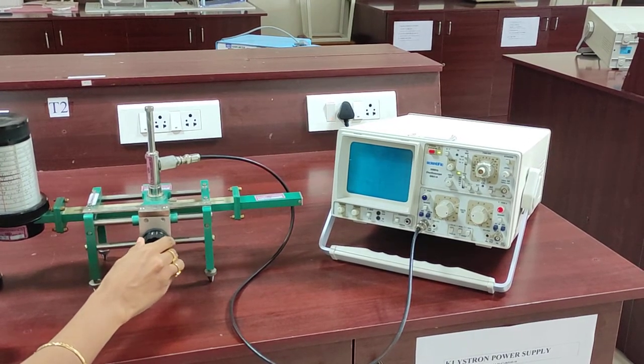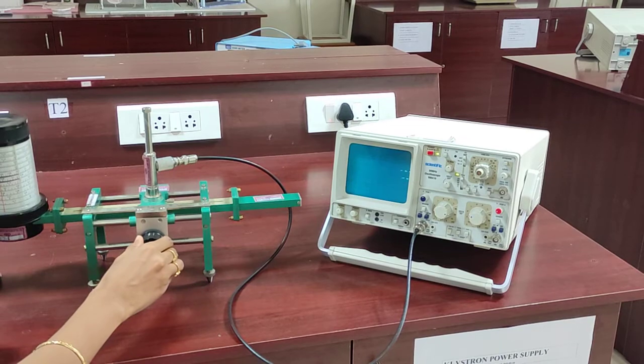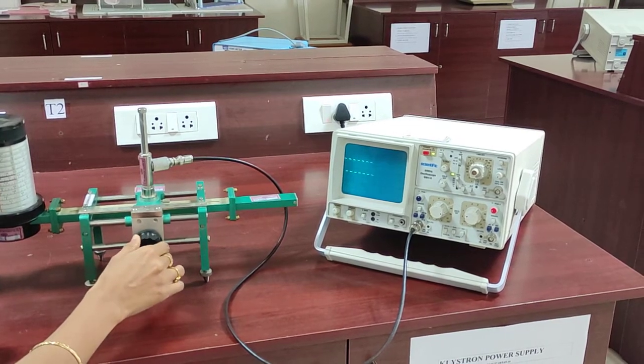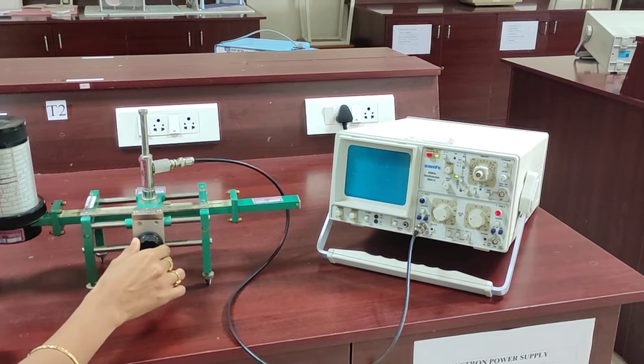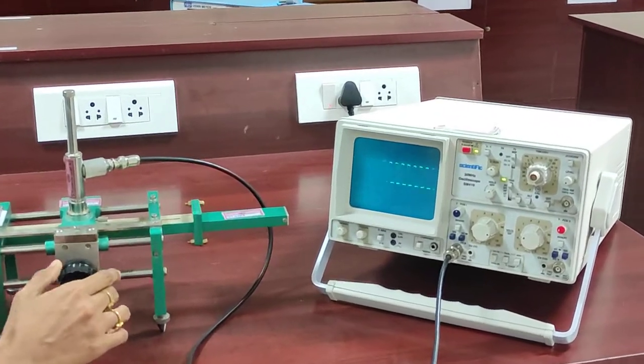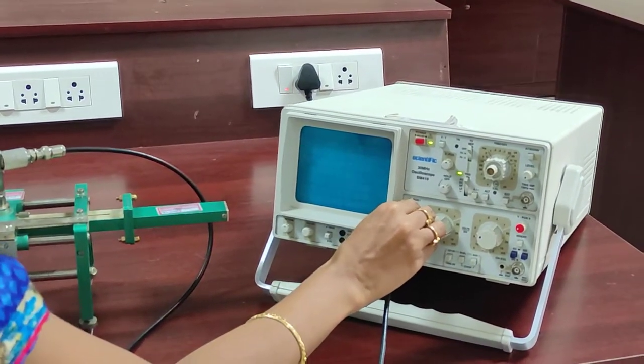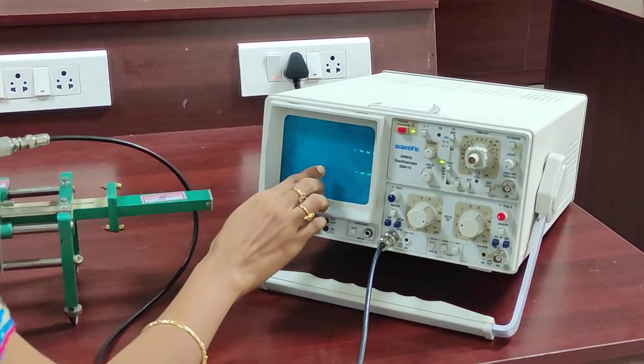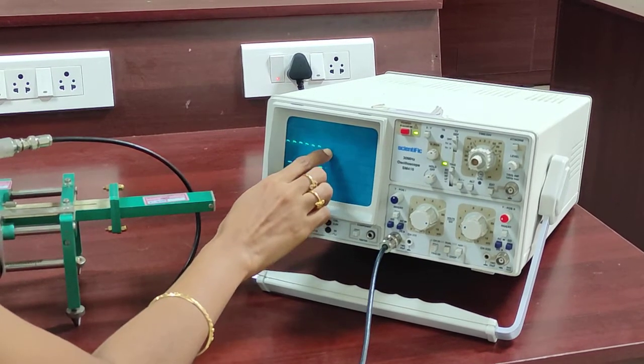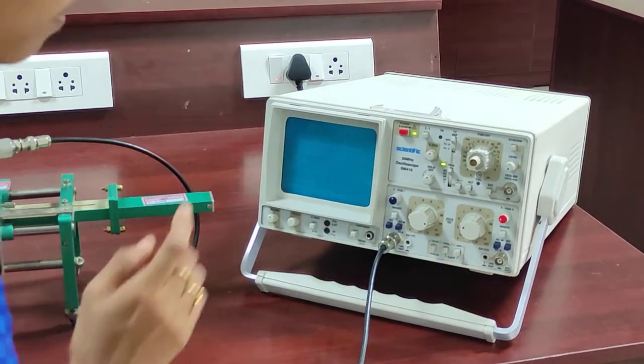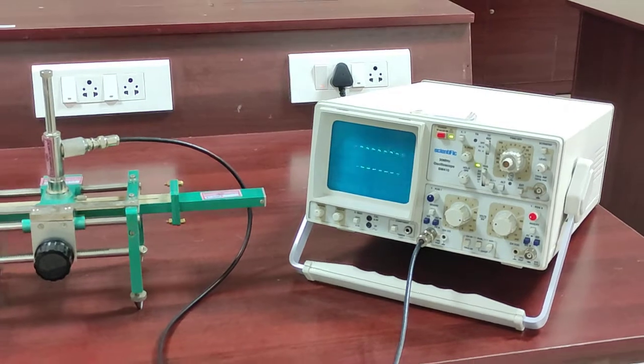I am checking for maximum position. See, at a particular point, I am getting a maximum value. This is my Vmax value. It is approximately 2.4 into 20 millivolt. This is my Vmax value.